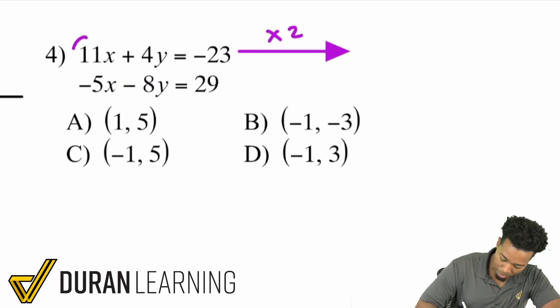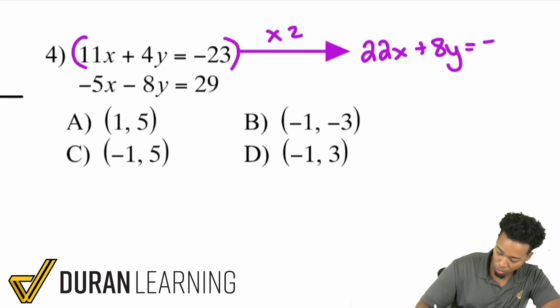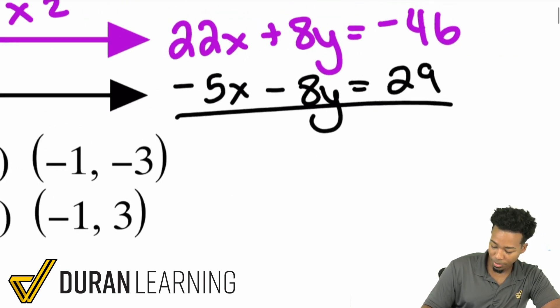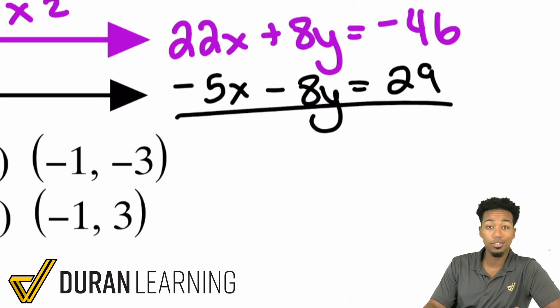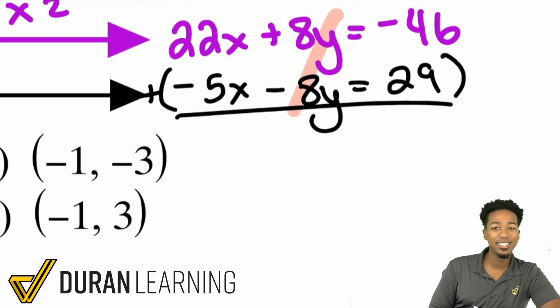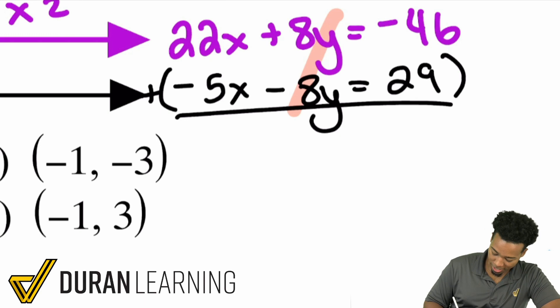So if I just go ahead and modify this equation by multiplying everything by 2, look at what happens. I'm going to have myself 22x plus 8y equals negative 46. Let's repeat this equation right over here, negative 5x minus 8y equals 29. Look at what happens now. I can go in straight up, and just add them together, and we're good.